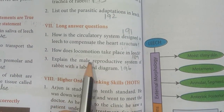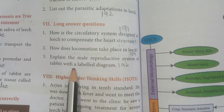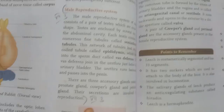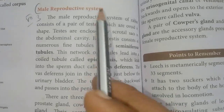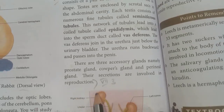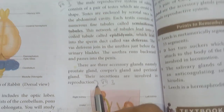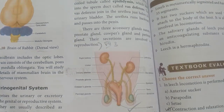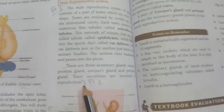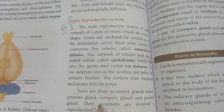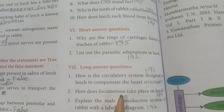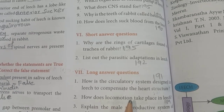Question 3: Explain the male reproductive system of rabbit with a labelled diagram. Refer to page 196. Read the two paragraphs up to the reproduction section, and draw a labelled diagram with all the parts. This completes the book back exercise for this lesson. The next lesson will be covered in the next video. Thank you for your support, thanks for watching.